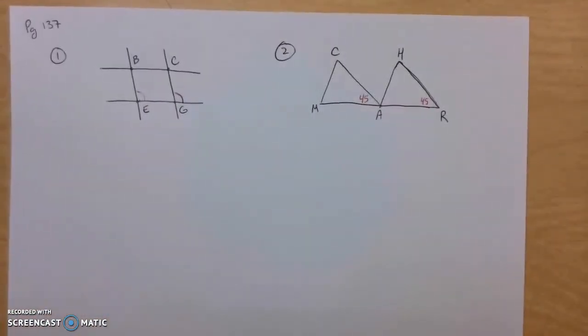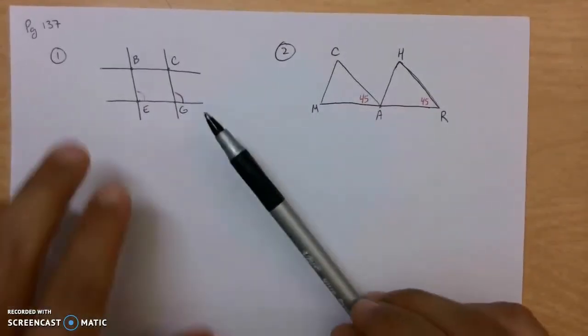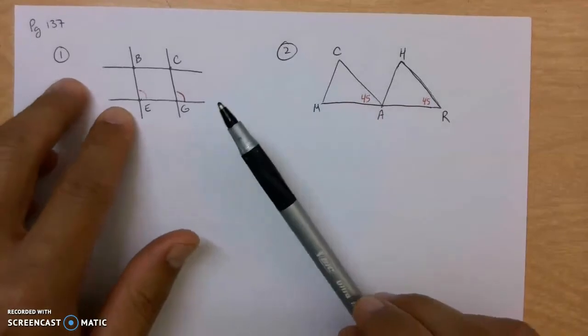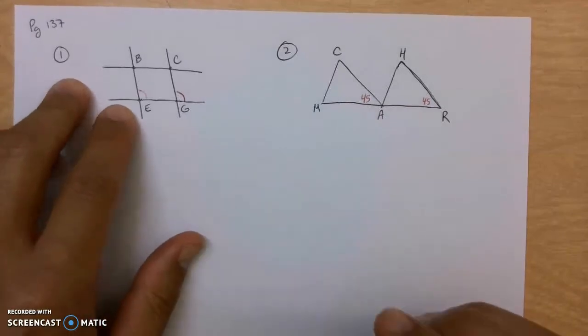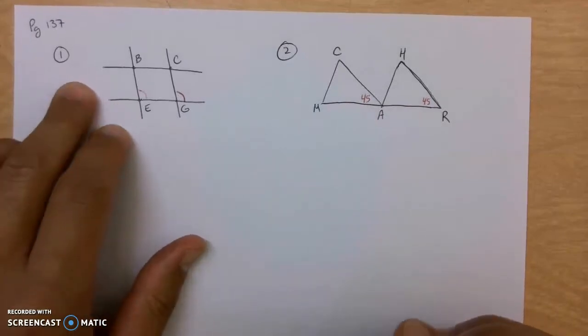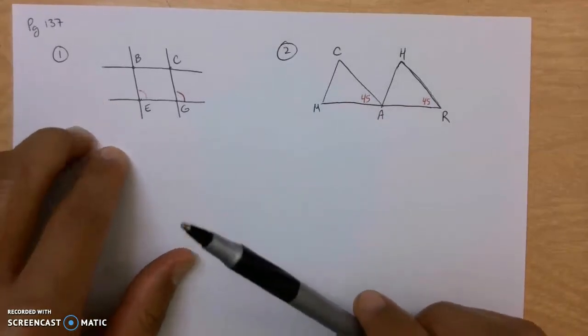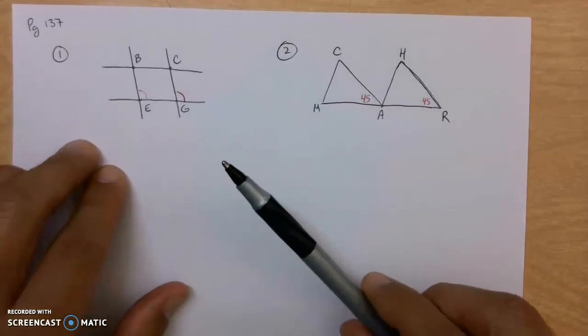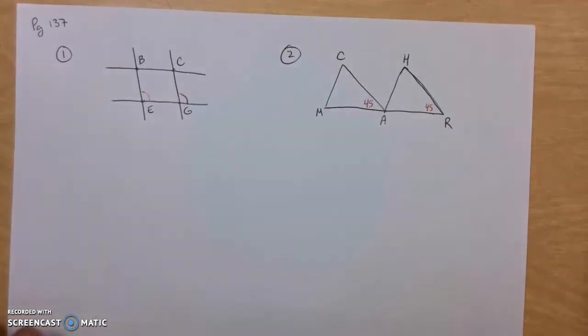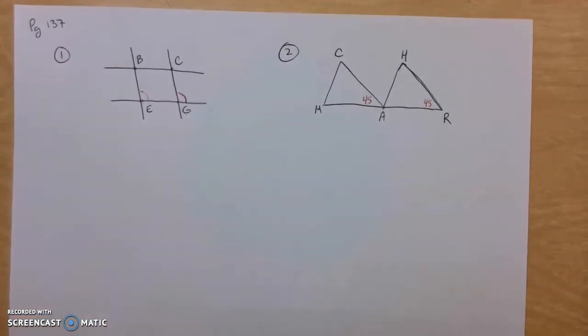We're going to go over a couple of problems here on page 137. The directions aren't here, so I'll just read them. Which lines or segments are parallel? Justify your answers.